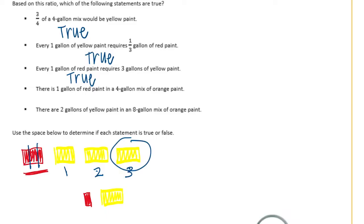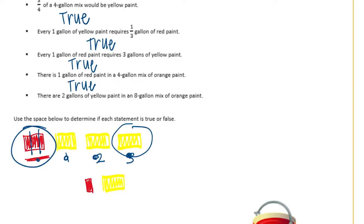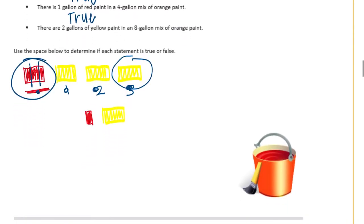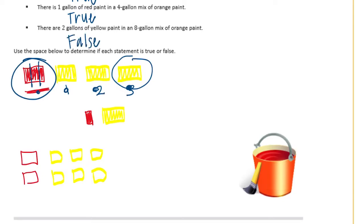There is 1 gallon of red paint in a 4-gallon mix — so there's 1 gallon of red in a 1, 2, 3, 4 gallon mix. That is true. And there are 2 gallons of yellow paint in an 8-gallon mix of orange paint. If we had an 8-gallon mix, it would be double everything, so there would be 2 red and 6 yellow. So it wouldn't be 2 gallons of yellow — it would be 6. So this last one is false.